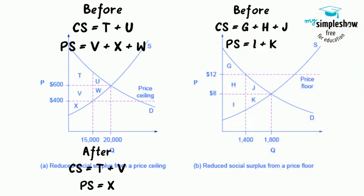The original equilibrium is $8 at a quantity of 1,800. Consumer surplus is G plus H plus J, and producer surplus is I plus K.